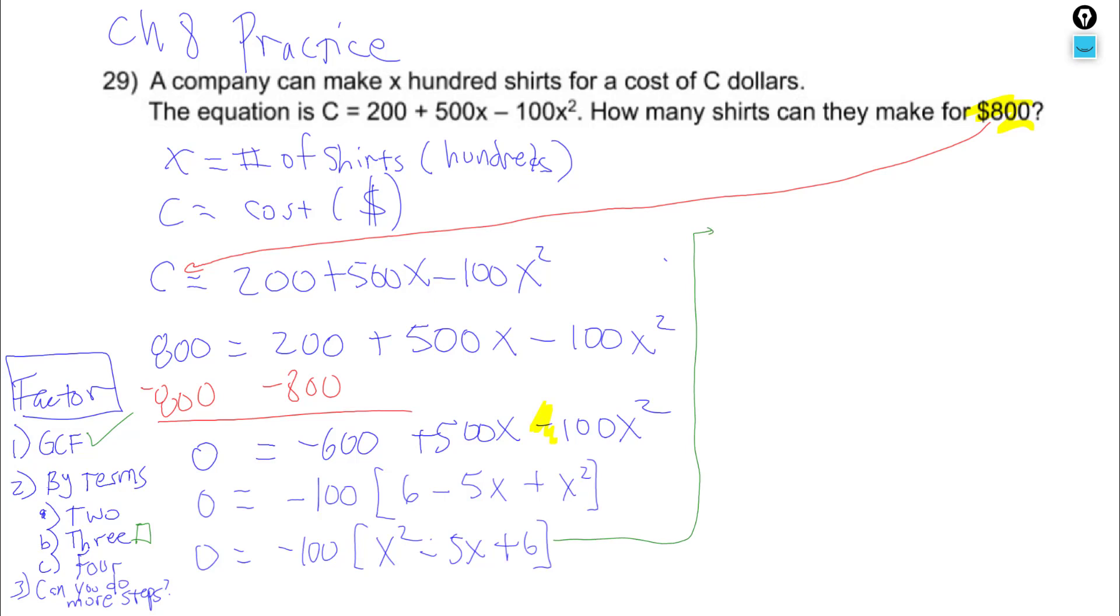We're going to have 0 equals negative 100 times, and I'm going to break down the reverse foil. X squared is easy. X times X. I need two numbers that multiply to 6 and add to 5. Normally our list is 1 times 6, 2 times 3. And depending on the signs, it could be either one. Because 1 and 6 could make 5 and 2 and 3 could make 5. It depends on the signs.